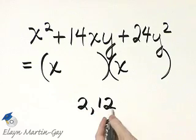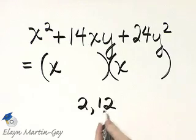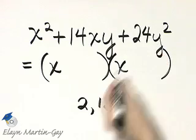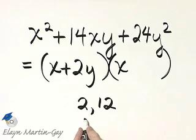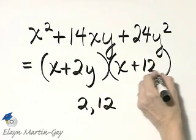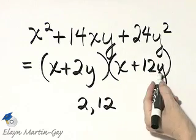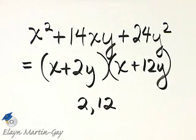That product is 24. That sum is 14. Now notice I have 24y squared. So I'll put plus 2y and then plus 12y. 2y times 12y is 24y squared.